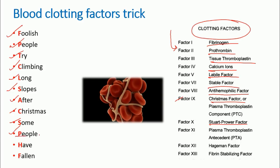Factor 10 — S for 'some': Stuart power factor. Factor 11 — P for 'people': plasma thromboplastin antecedent, or PTA. Factor 12 — H for 'have': Hageman factor. And factor 13 — F for 'fallen': fibrin stabilizing factor. So that's how you get to know the names of all these factors.